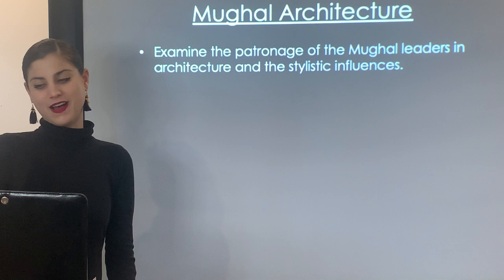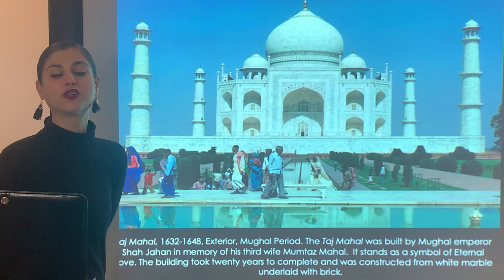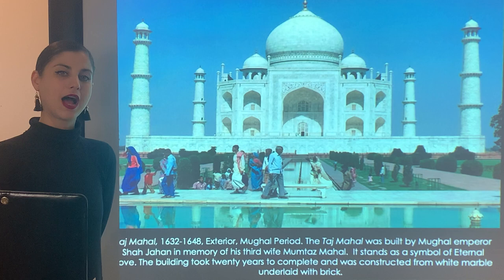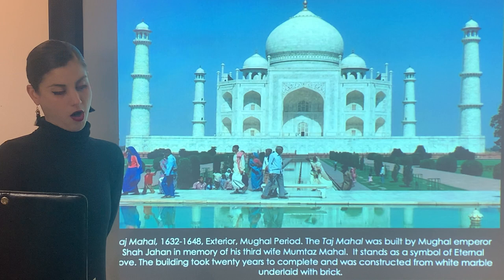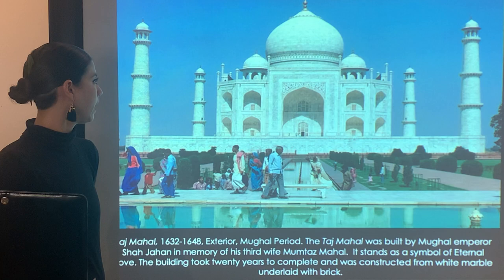Let's look at one of the most famous Mughal architectural masterpieces: the Taj Mahal. 'Taj' means crown. The Taj Mahal was built by Mughal Emperor Shah Jahan in memory of his third wife, Mumtaz Mahal, and it stands as a symbol of eternal love. The building took 20 years to complete and was constructed from white marble underlaid with brick.